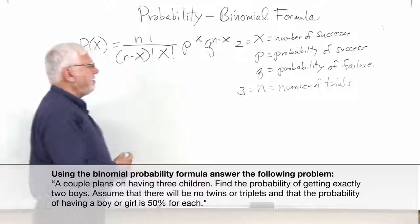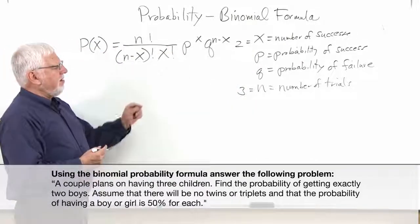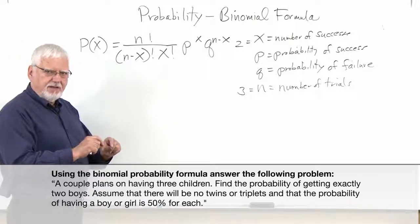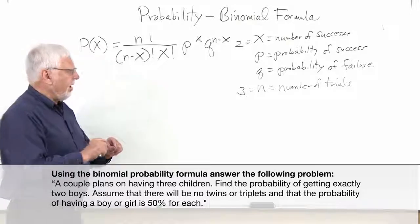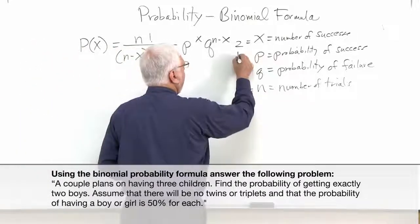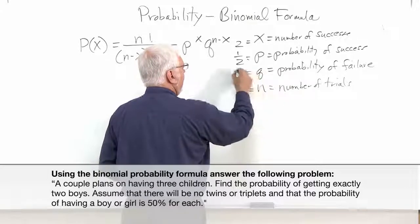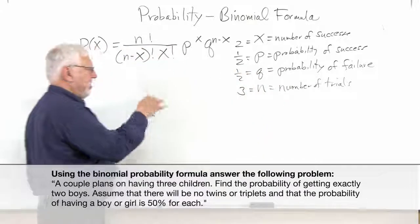Now what's our p and our q? p is the probability of success. Well what's the probability during each event that it's going to be a boy? That would be one half. And what's the probability of failure? One half. So now we just plug those numbers in, and we'll see if we get our three eighths.